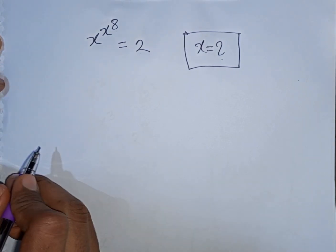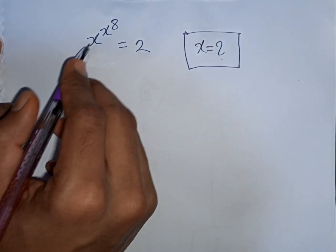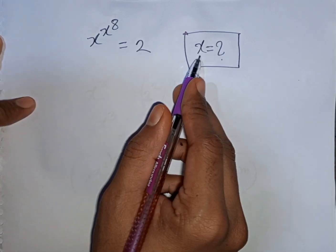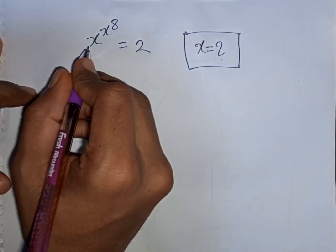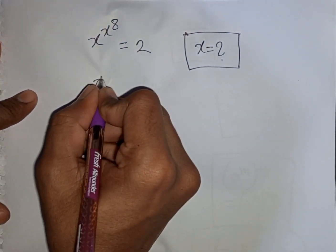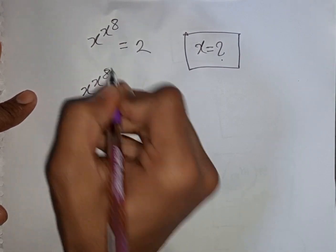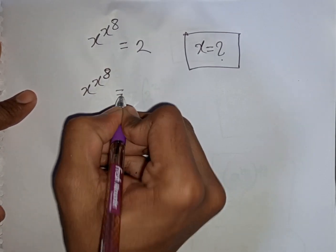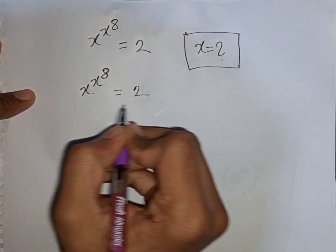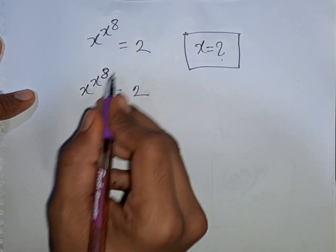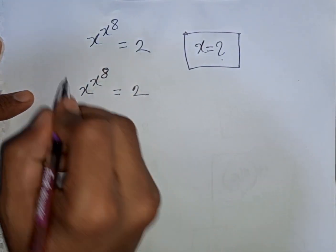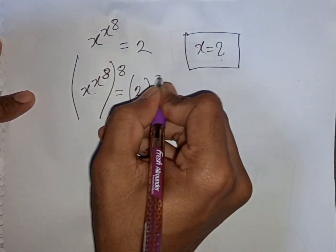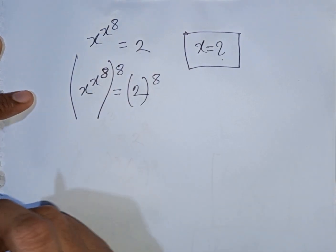How to solve x power x power 8 is equal to 2. Find the value of x. We have x power x power 8 is equal to 2. Now we multiply by power of 8 on both sides.